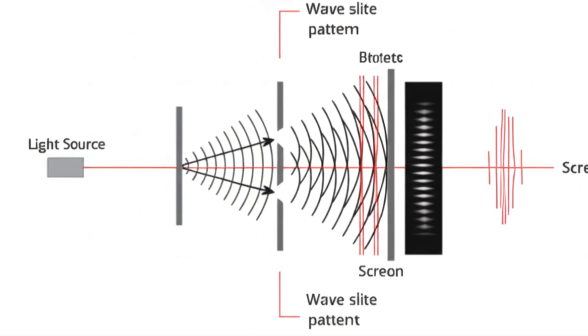Let's revisit the core of the quantum puzzle. Imagine firing electrons, one by one, at a barrier with two tiny slits. Behind the barrier, a screen records where they land.